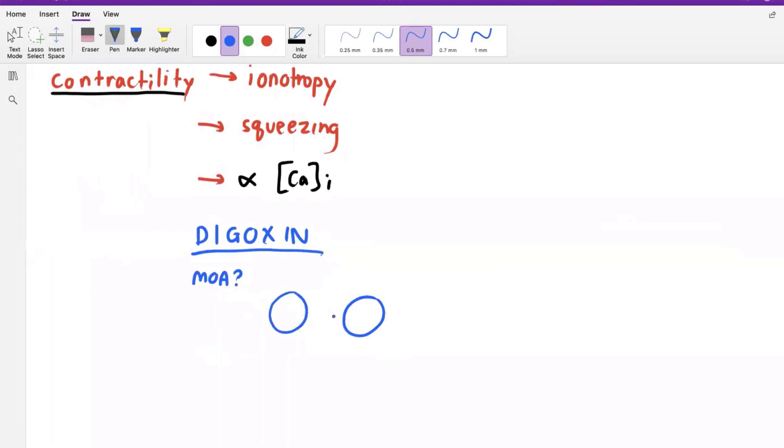It inhibits the Na plus K plus ATPase. Yeah, exactly. So Na out, then K plus is coming in, right? And this is an example of primary active transport.